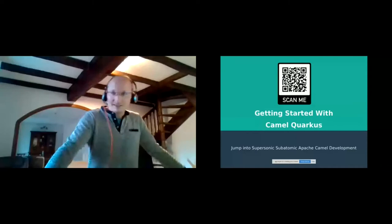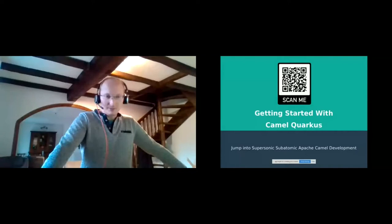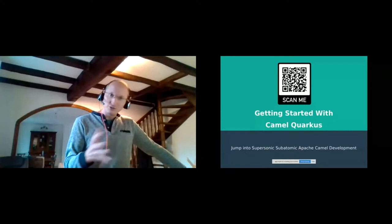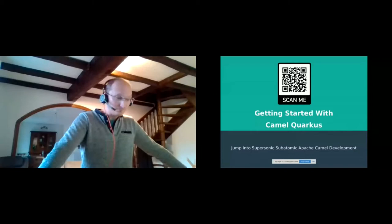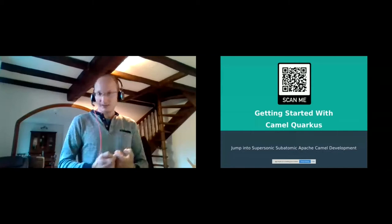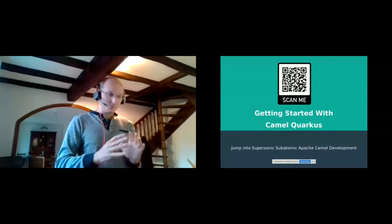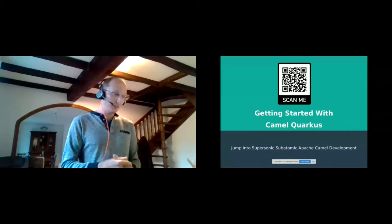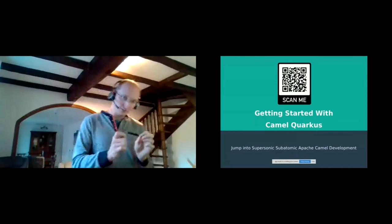Quarkus is a Kubernetes Java stack tailored for HotSpot OpenJDK and GraalVM. During this session we will learn a few concepts: first, Quarkus extensions, then dev mode. The core of the presentation will cover implementing tests and explaining JVM and native modes. Finally, we will wrap up by finalizing our typical Camel route and look at the same route deployed on different runtimes, comparing some key metrics.